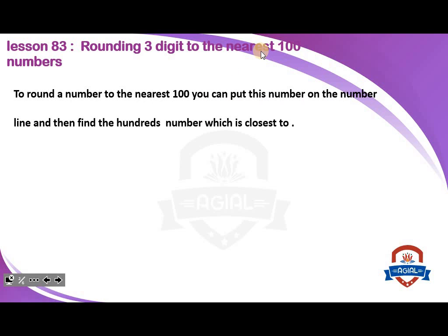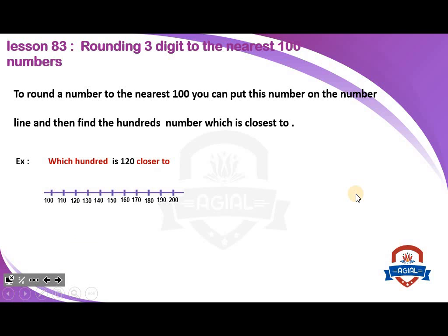To round a number to the nearest hundred, you can put this number on the number line and then find the hundred number which it is closest to. For example, which hundred is 120 closer to? We will make a number line — we start with 100 and stop at 200. We make a circle at 120 and see: is 120 closer to 200 or closer to 100? 120 is closer to 100 because of the shortest distance here.